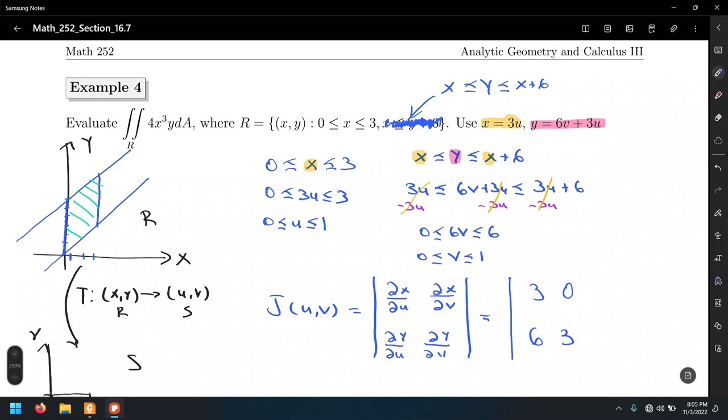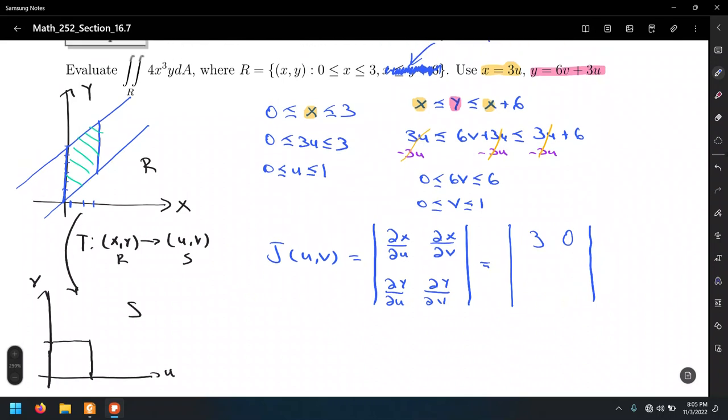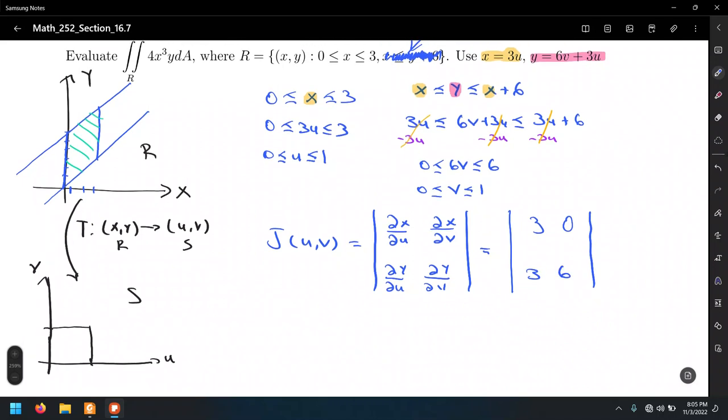Evaluate the determinant to get 3 times 6, which is 18, minus 0 times 3, which is 0. This is going to be 18. In this case, no need to find any absolute value because it's a positive number. If you get a negative number out of the Jacobian, just change the sign to positive.